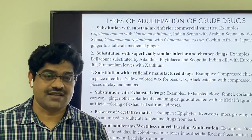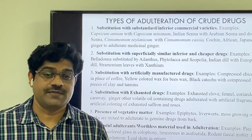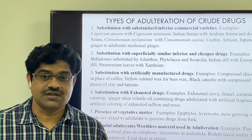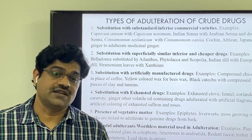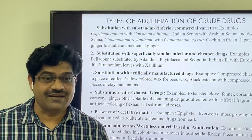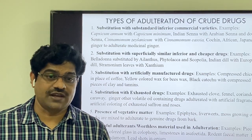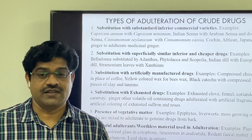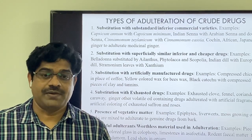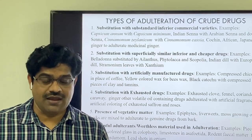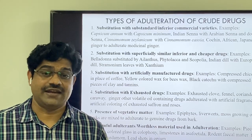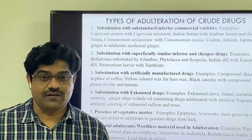The next type is substitution with artificially manufactured drugs. In this kind of adulteration, drugs are artificially produced using chemicals for fragrance or artificial colors. Examples include compressed chicory used in place of coffee beans, paraffin wax colored with artificial yellow color posed as authentic beeswax, and black catechu adulterated with compressed pieces of clay and tannins.